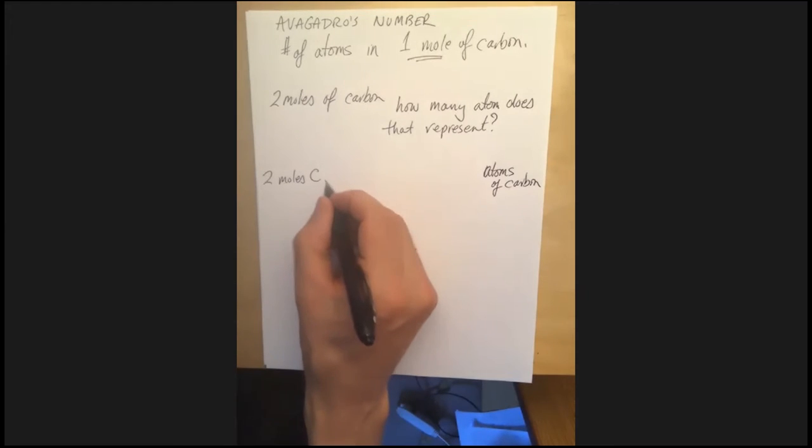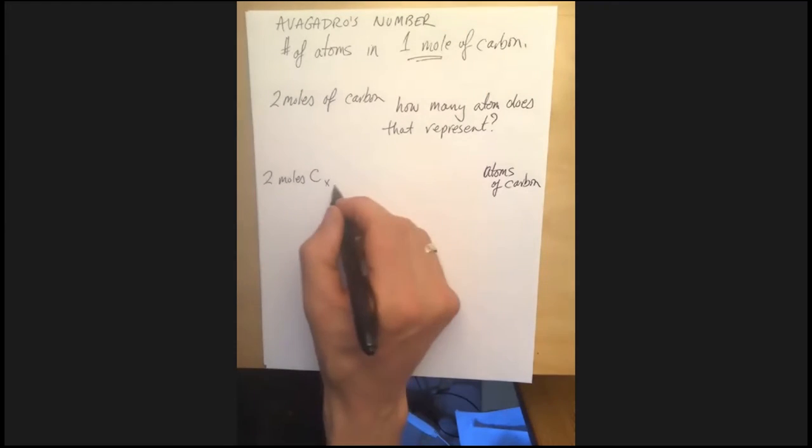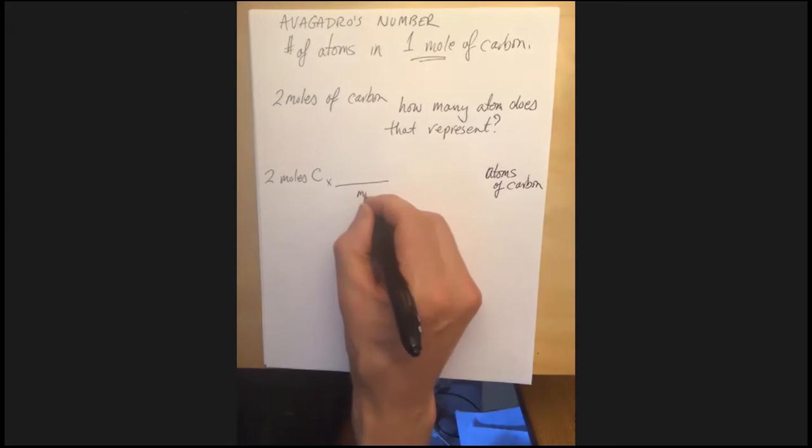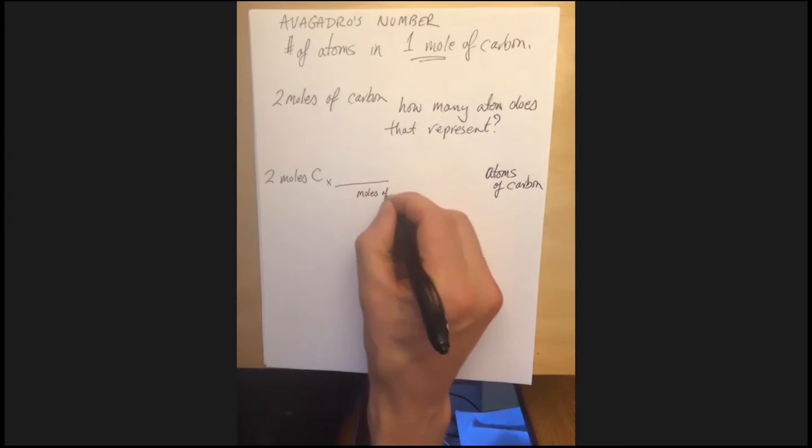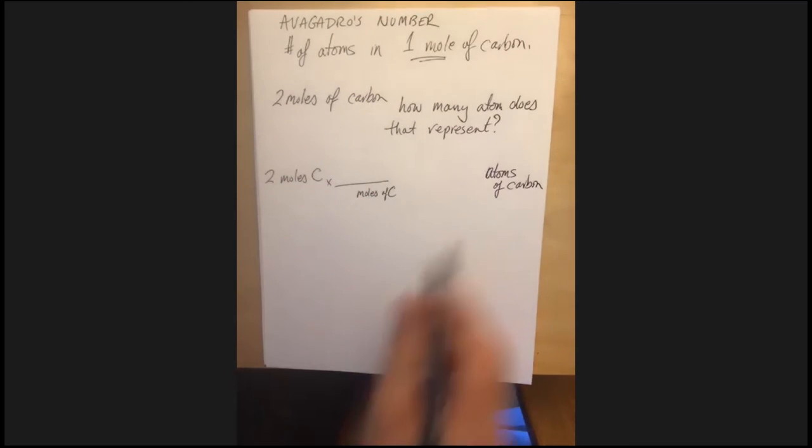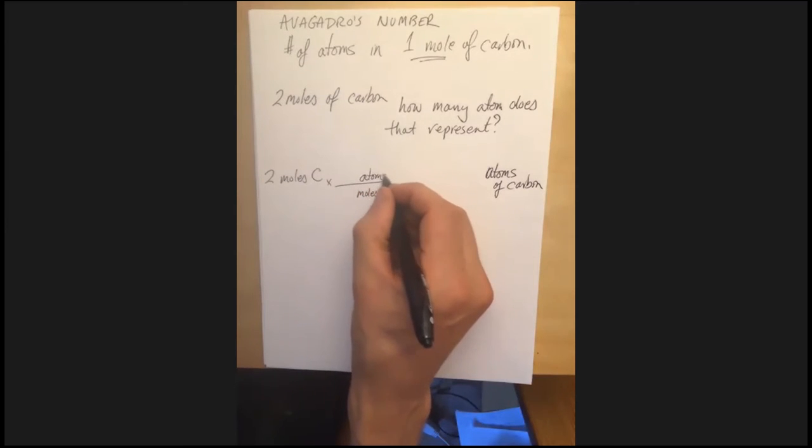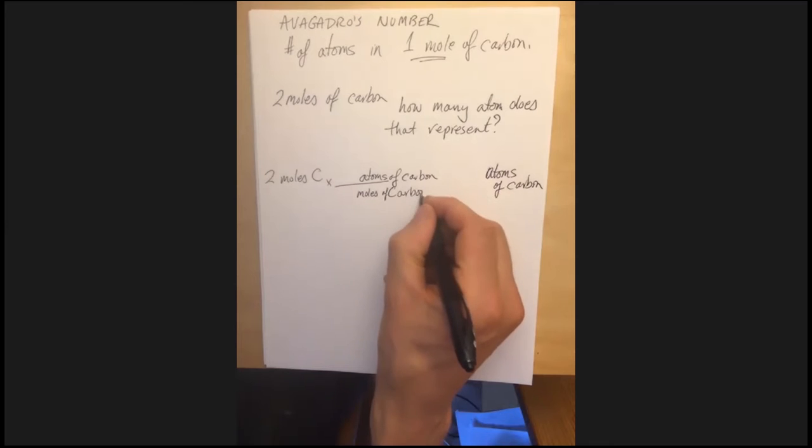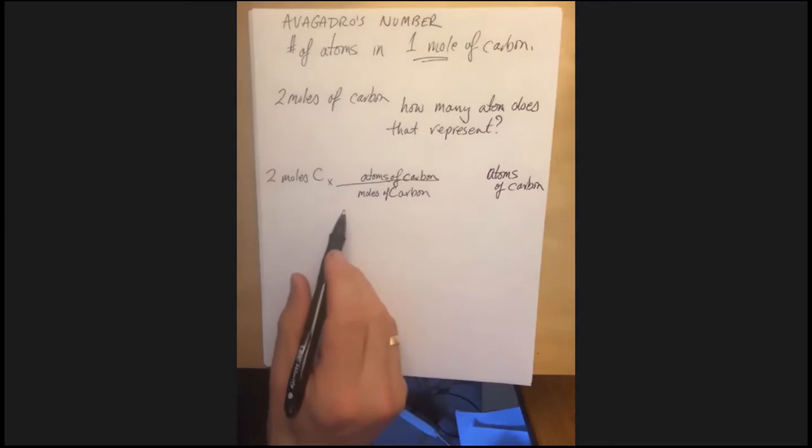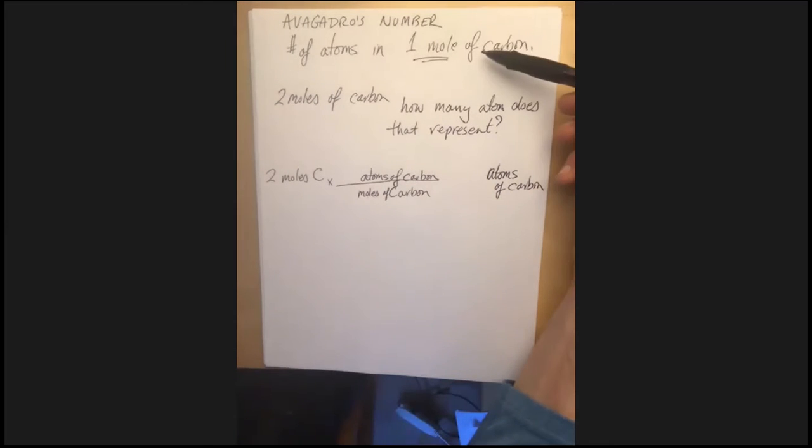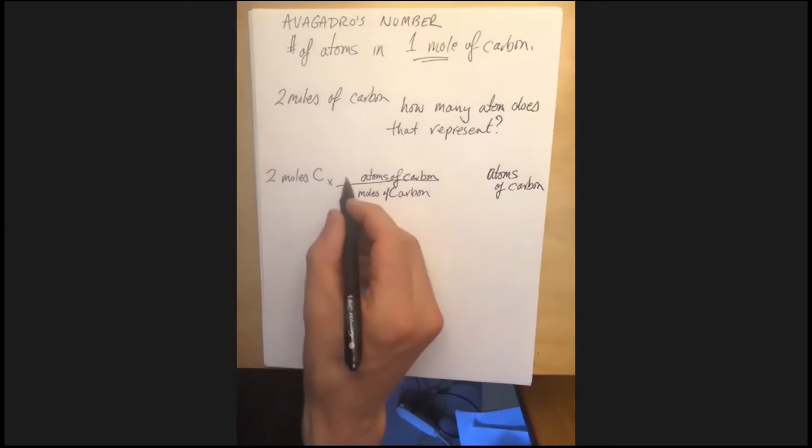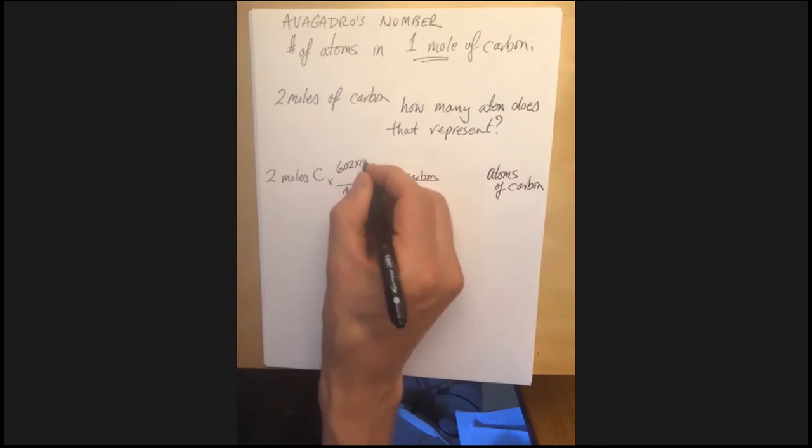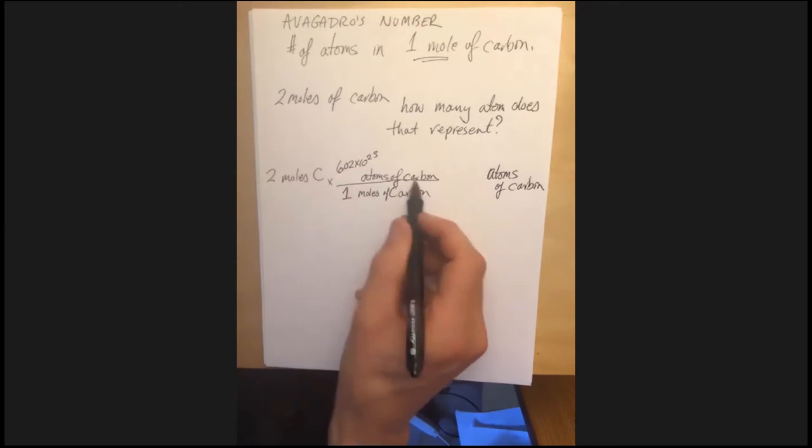So I'm going to go from two moles of carbon over to atoms of carbon. This is dimensional analysis. We're going to get rid of moles. And so I got to have moles of carbon on the bottom and I'm trying to get to atoms of carbon. And this relationship tells me that for every one mole of carbon, I must have 6.02 times 10 to the 23rd atoms of carbon.